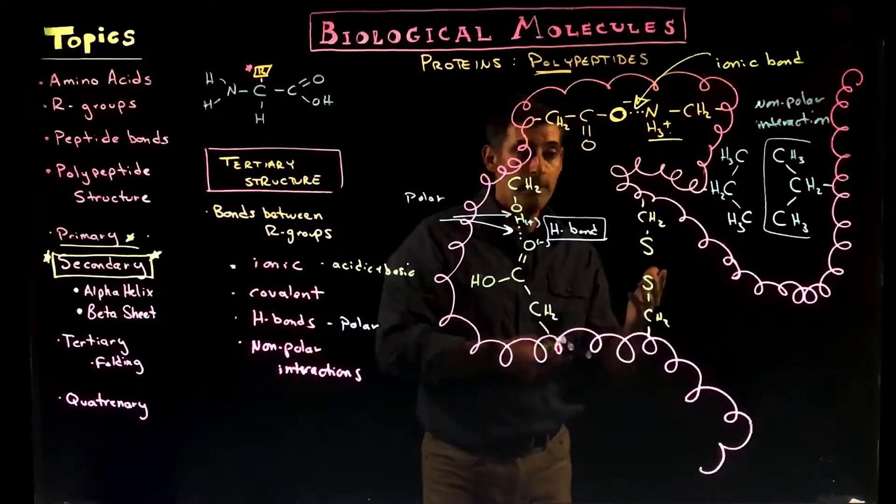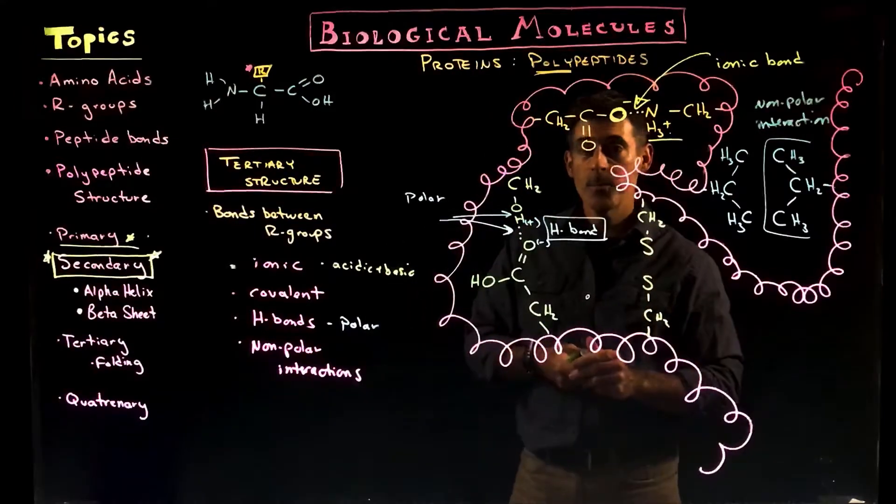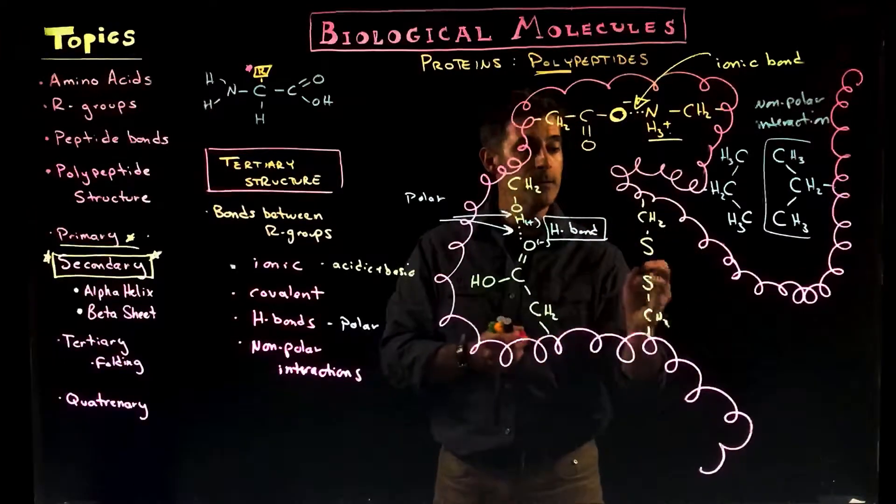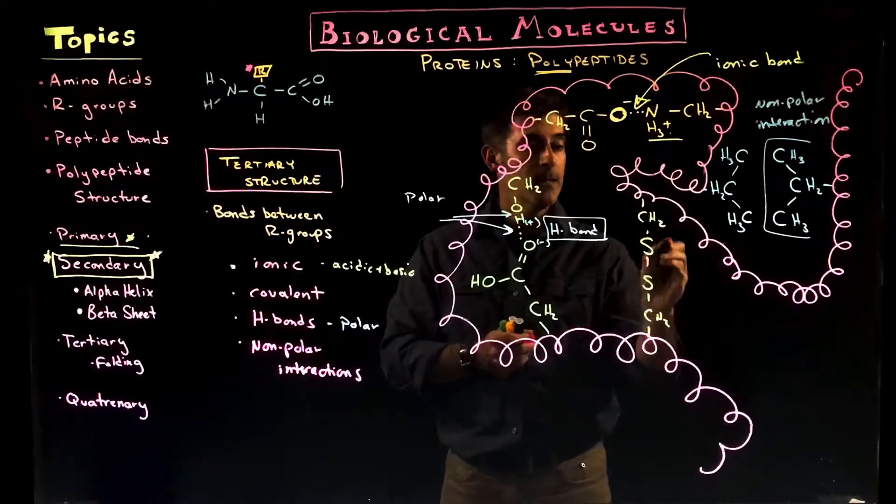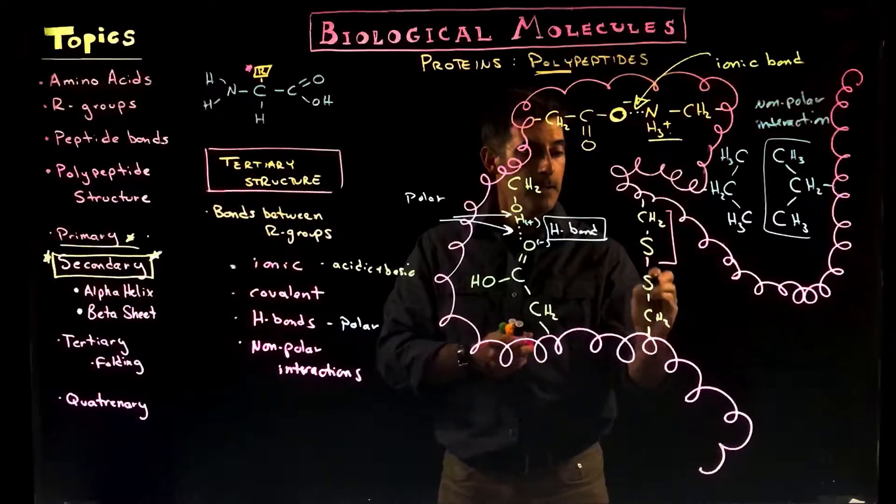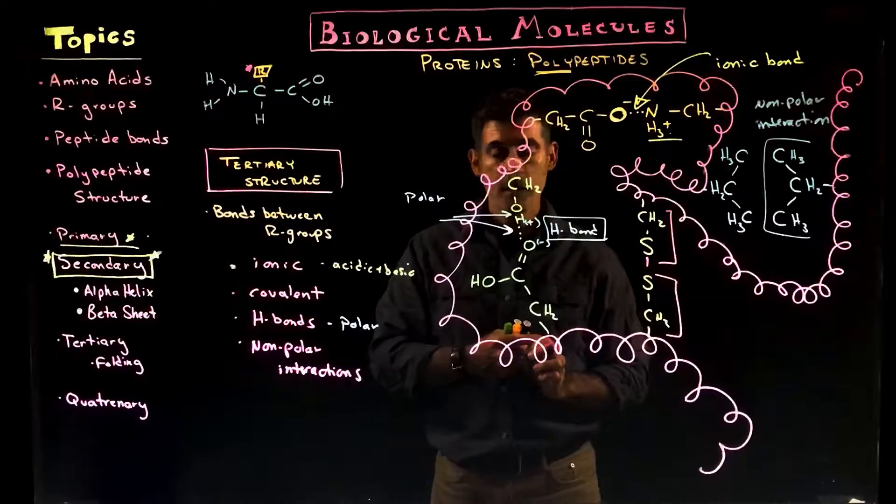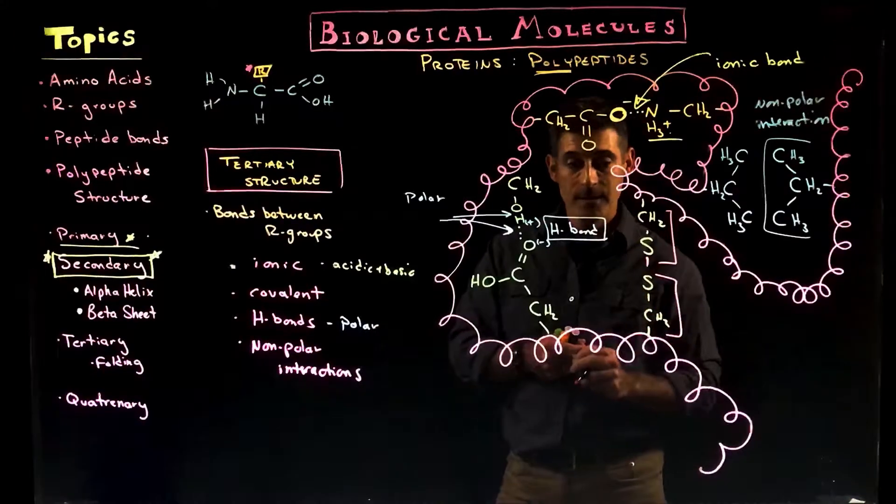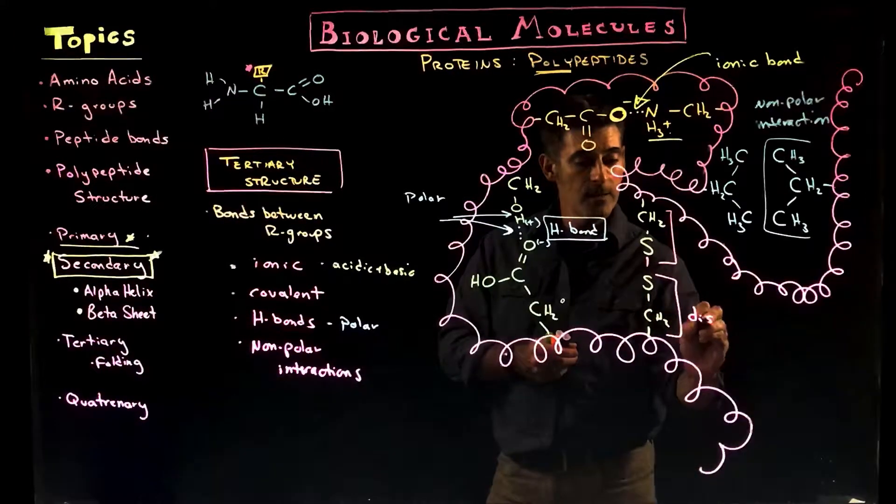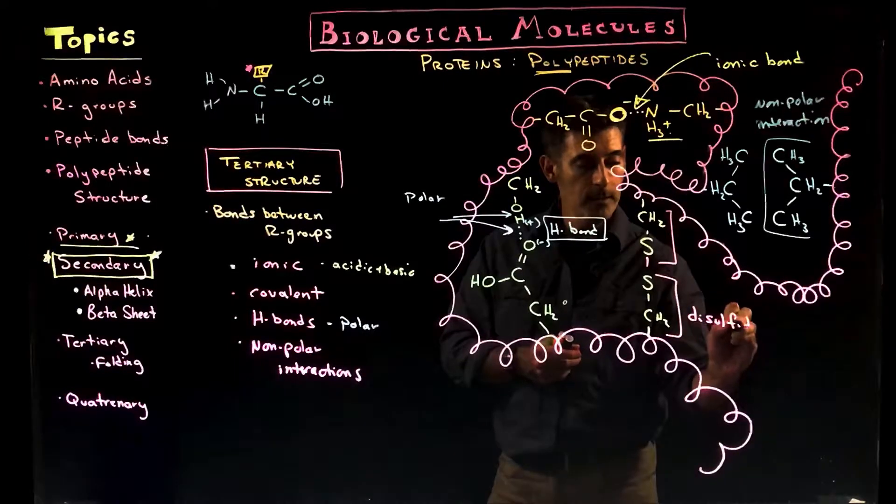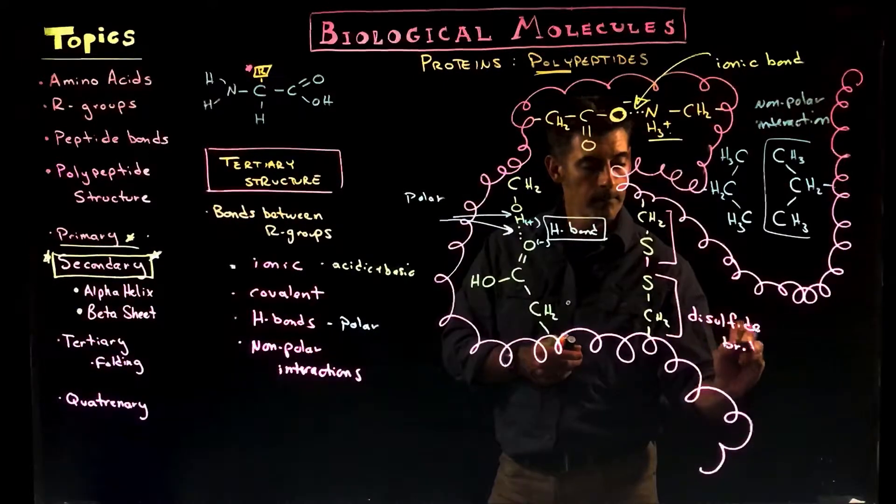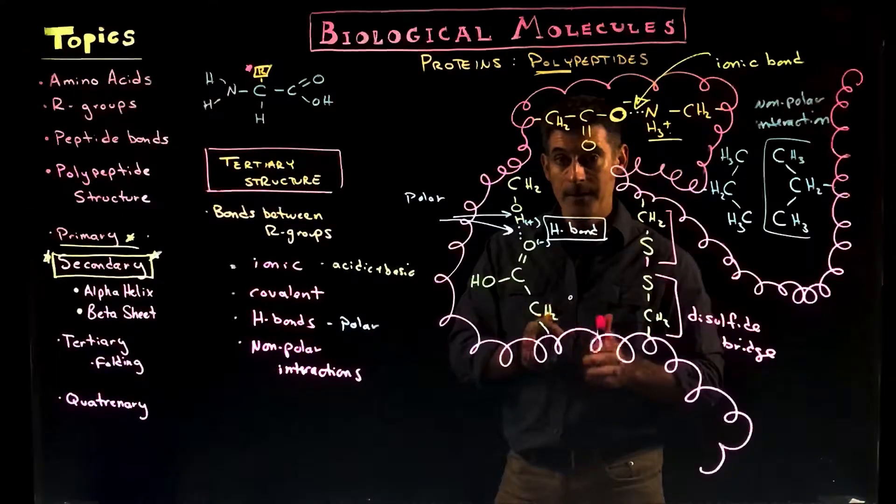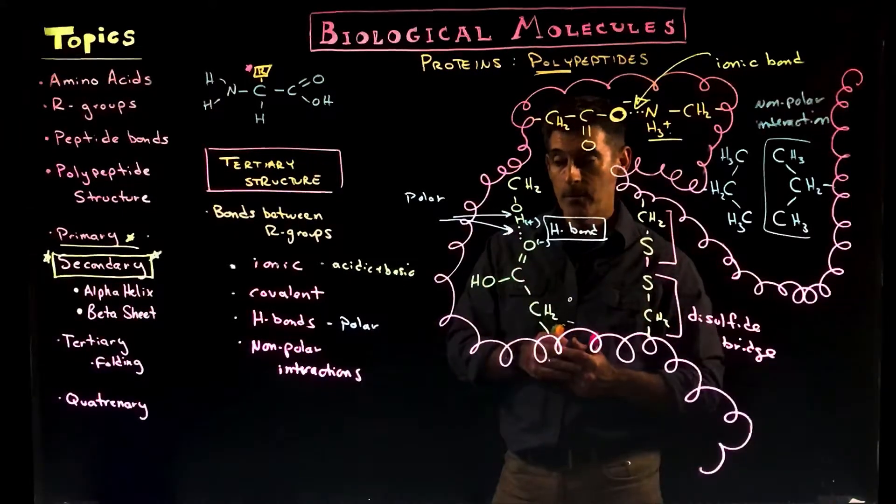Some types of the R groups will tend to form covalent bonds with each other. One of the most common types of covalent bonds that we'll see is a bond between these particular groups here. They're sulfhydryl groups that are found in the amino acid cysteine, and they form something called a disulfide bridge. A disulfide bridge is particularly strong and stabilizing for the three-dimensional structure of a protein.